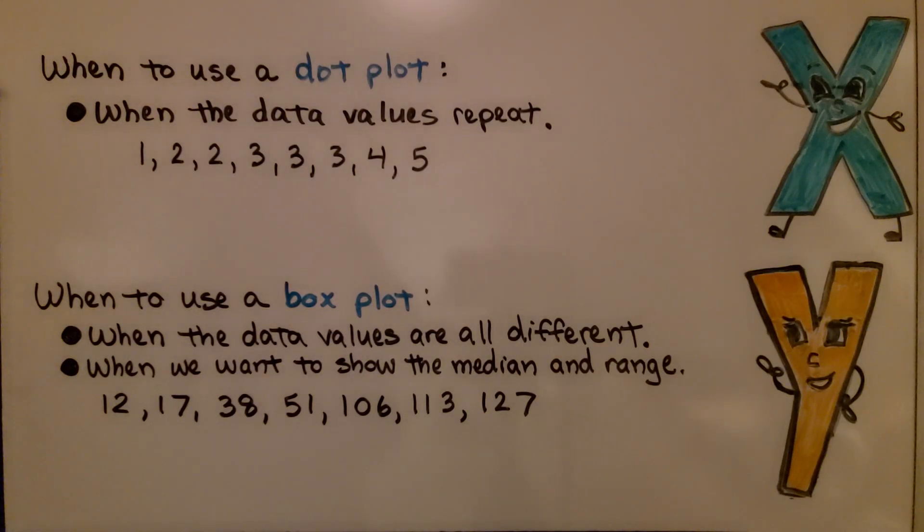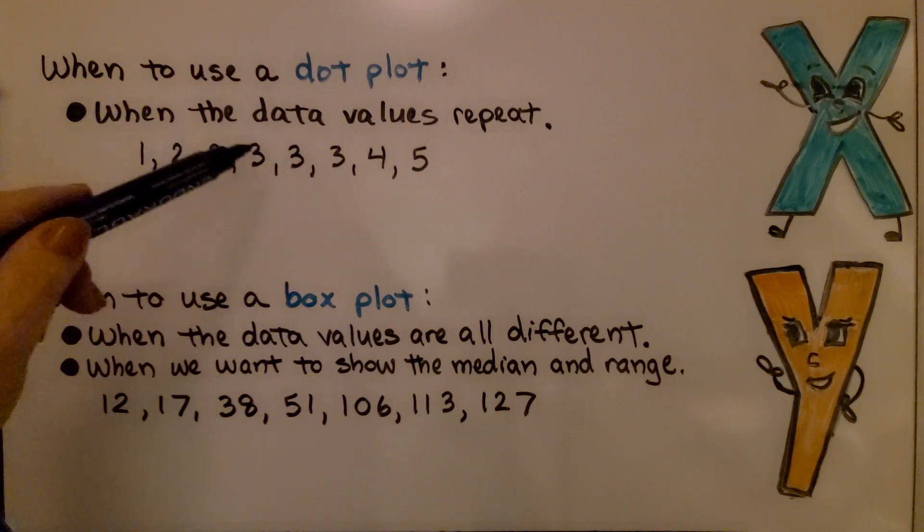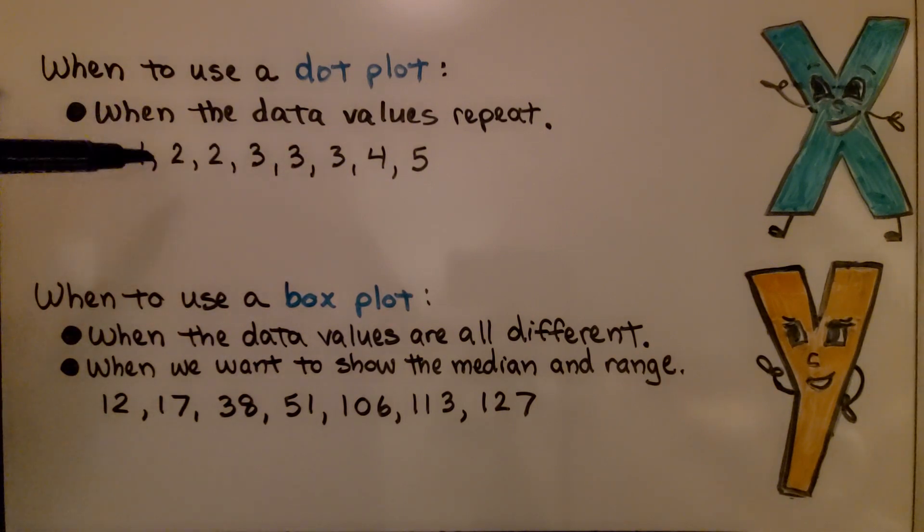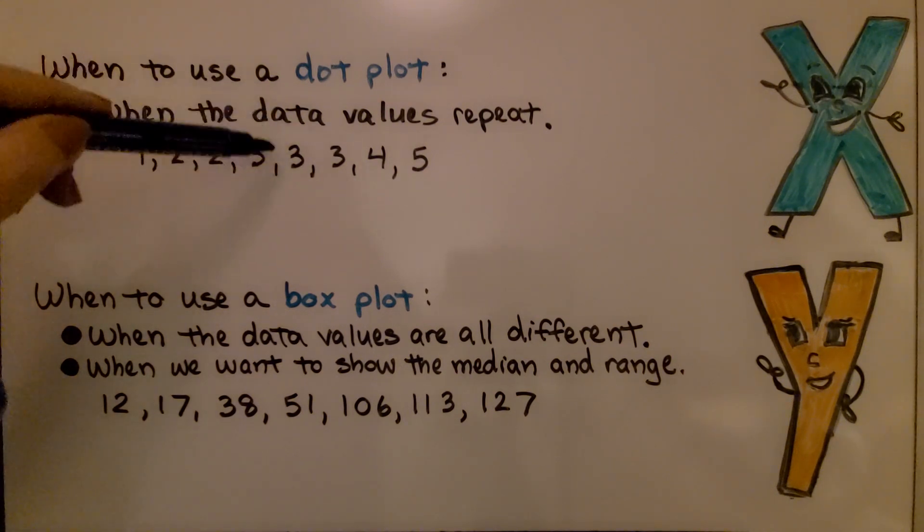When do we know to use a dot plot compared to a box plot? We use a dot plot when the data values repeat. Here's our data values. We have a couple of twos, we have three threes. A dot plot would work because we could stack the two dots on top of each other and the three dots above the three.